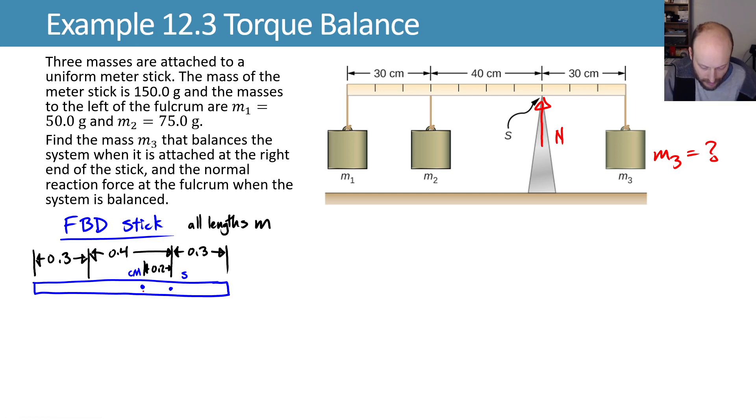Let's put our forces in. Our mass times gravity for our stick is acting down at the center of mass. Our normal force at that fulcrum is acting up. Our unknown mass 3 times gravity is acting down at the right. Our known mass m1 times gravity is acting down at the left. And then here we have mass 2, which we also know times gravity acting downward. Okay, lovely.